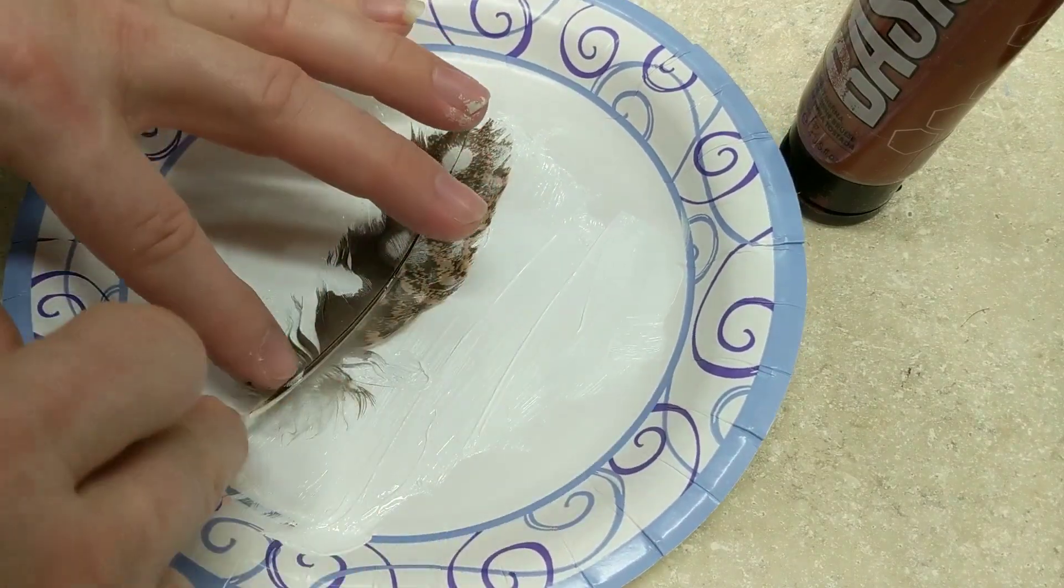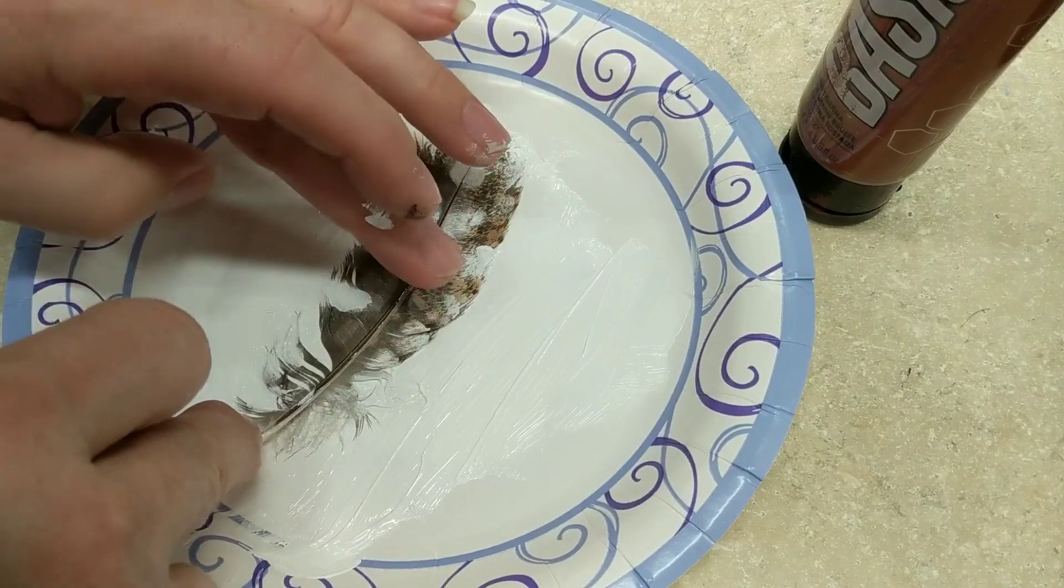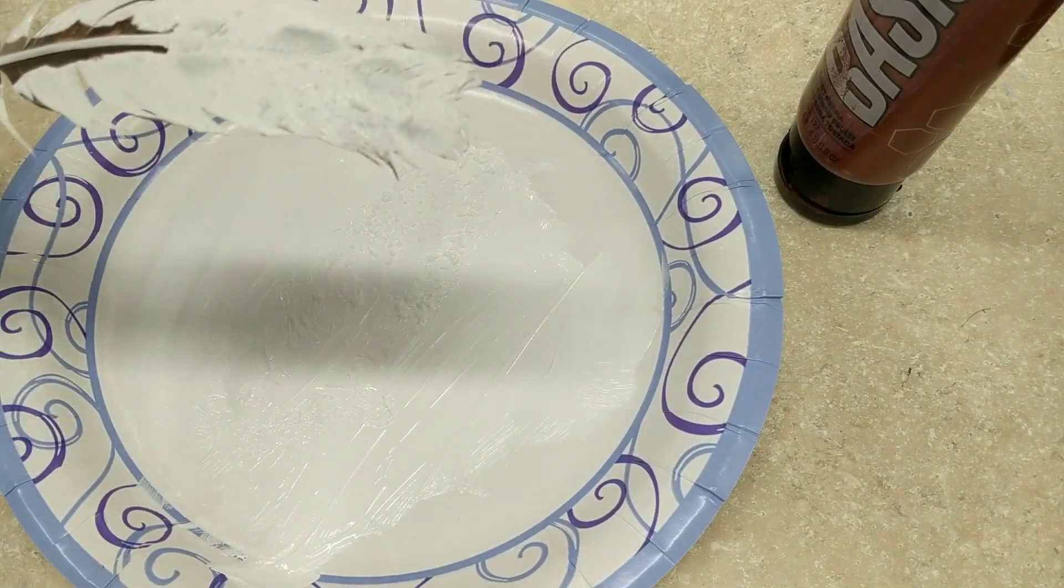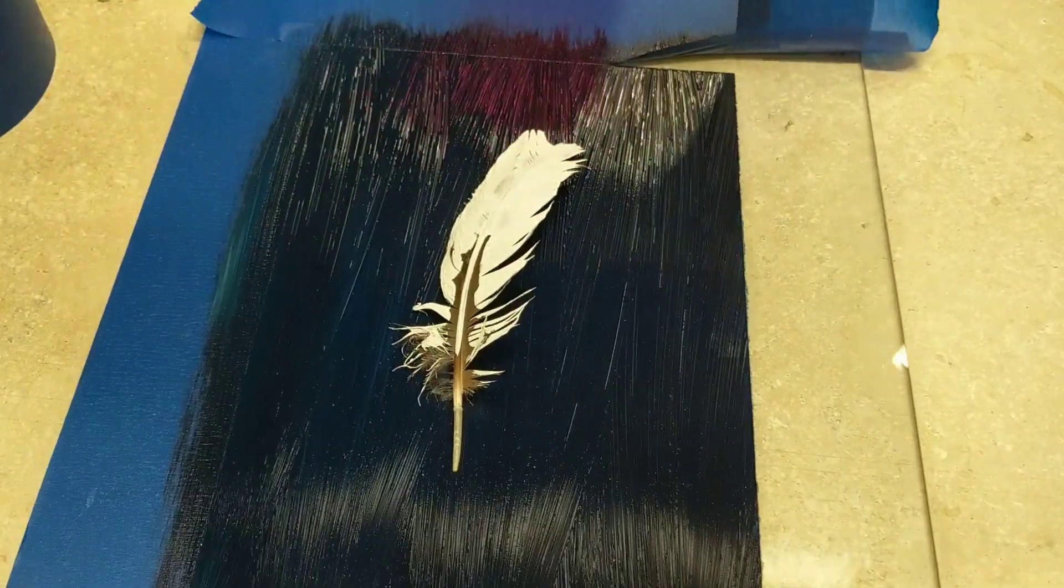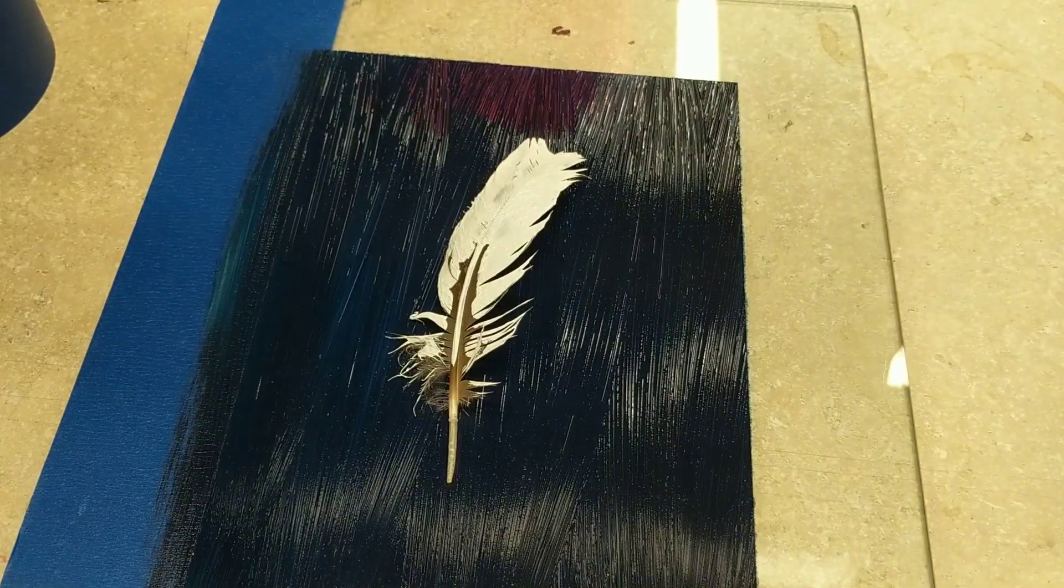The paint just squeezes right through the feathers. Kind of cool. That's why I'm getting it on my fingers. Peel it up. Put it back in the middle of the picture. I'm going to take the tape off so that I get a nice little even edge all the way around my monoprint.